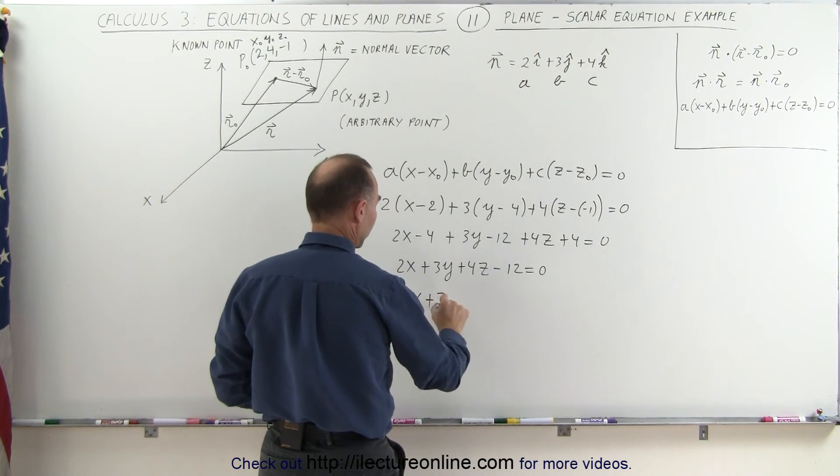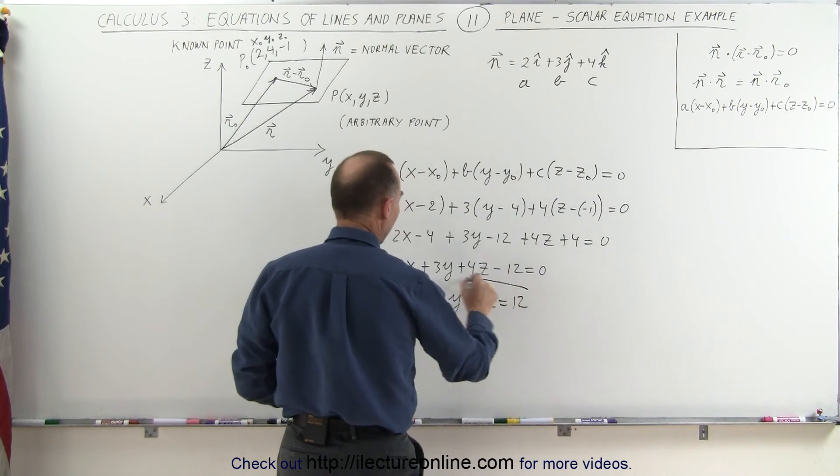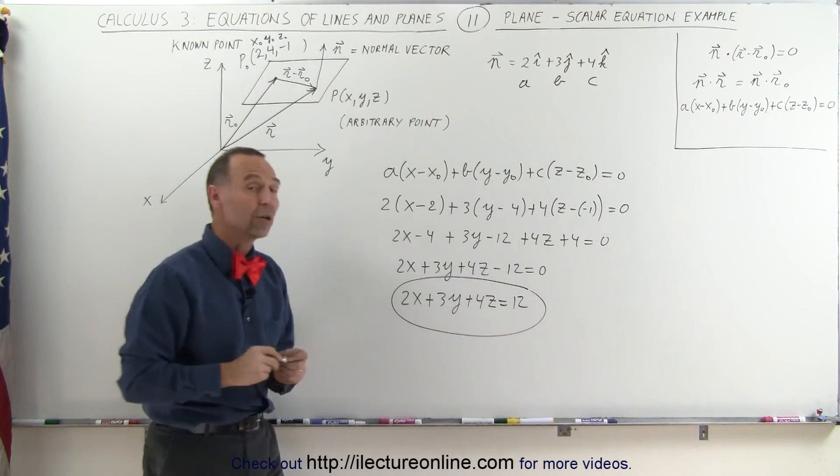Or if you move the 12 to the other side, we can write this as 2X plus 3Y plus 4Z equals 12. And that would be a good way of writing the final equation.